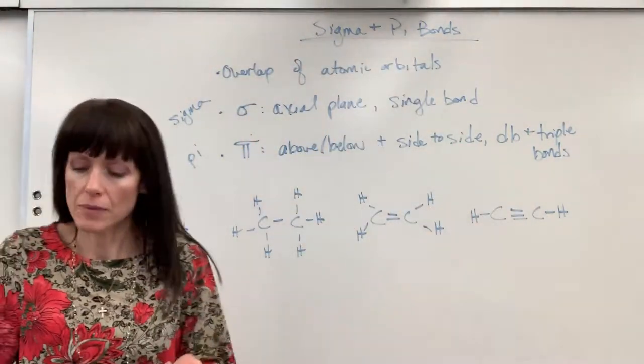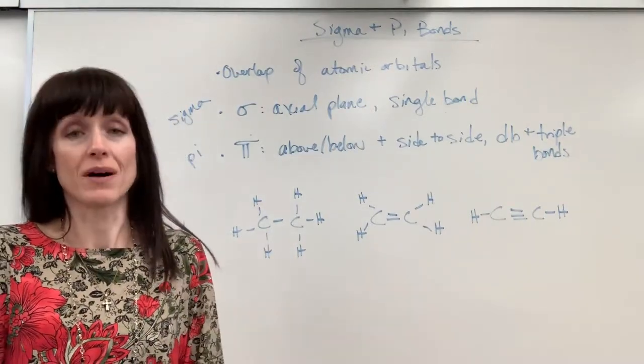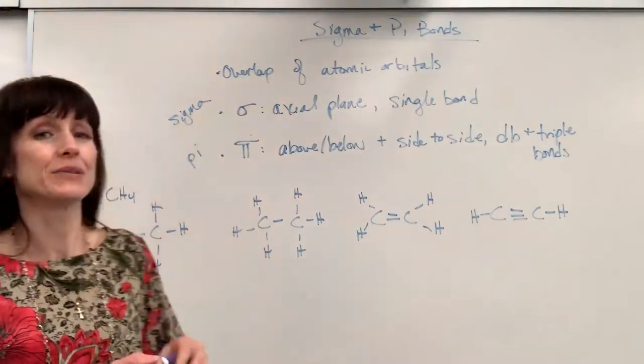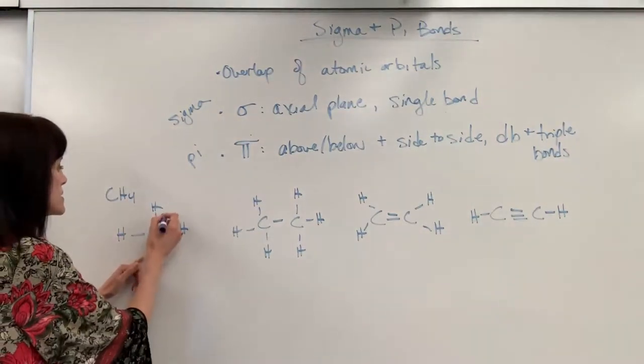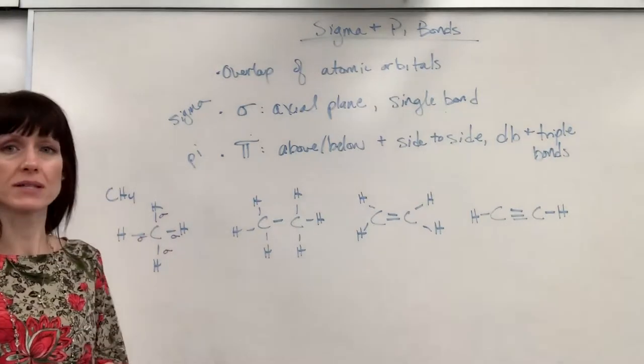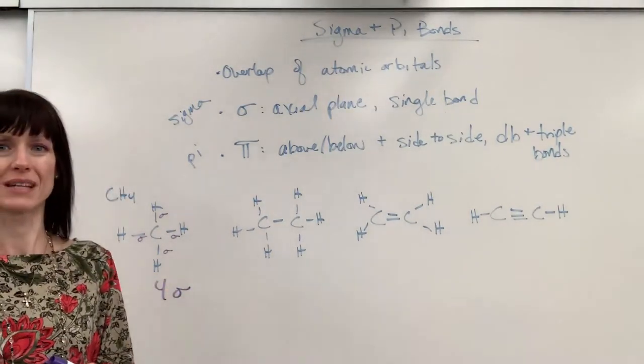So let's look at methane. We're just going to be observing and counting the bonds, single, double, triple. So what I do is I actually write sigma next to the bond. Every single bond is going to be a sigma. So each of those single bonds is a sigma. This has four sigma bonds.